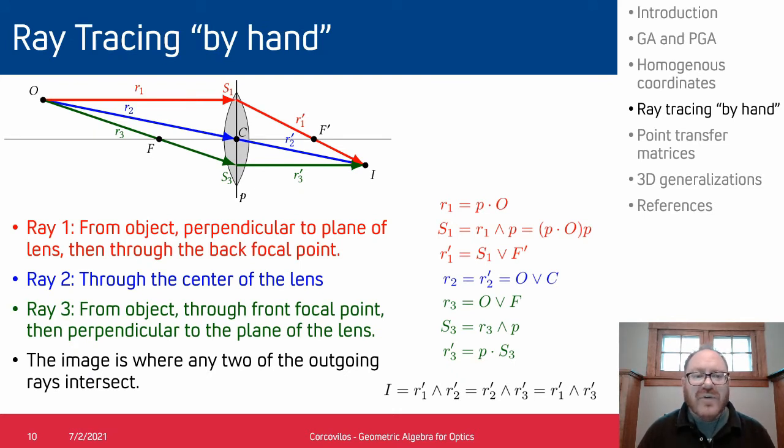Just to give you an example of what some of these PGA calculations look like, I've worked through a simple example here. So this is what I call ray tracing by hand, which is what we teach in freshman physics for drawing the rays through an optical system using just a ruler. And so here we have a thin lens and an object point, and then we put out three rays: one that begins perpendicular to the lens (r1), r2 goes to the center of the lens, and r3 goes through the front focal point of the lens.